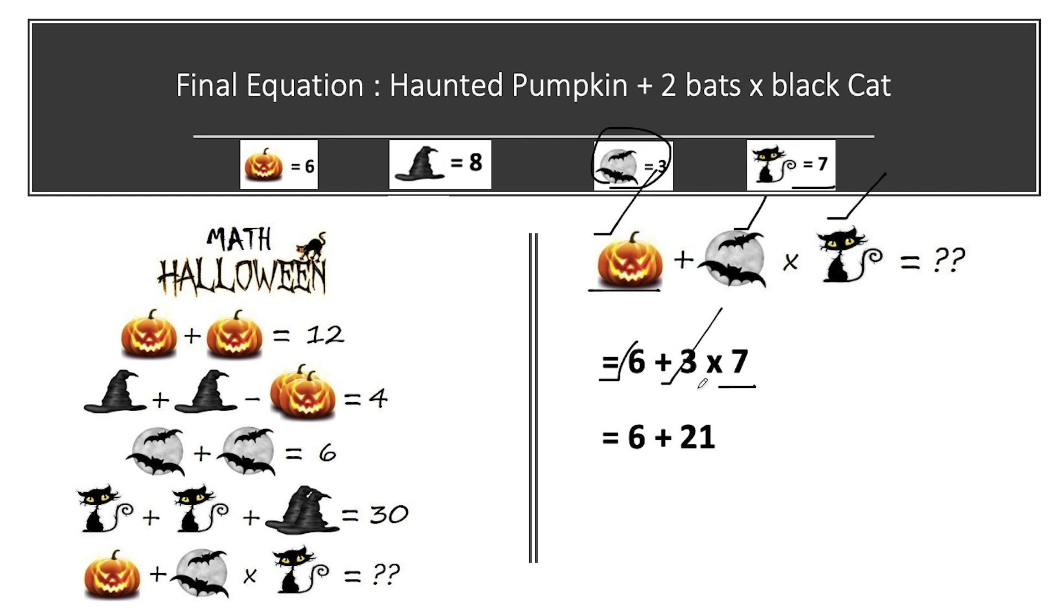So here we have multiplication sign and addition sign. So firstly we will multiply this both. And then the value which will come after multiplication, we will add that with 6. So 7 into 3 comes out to be 21. 21 plus 6 is equal to 27. And we have solved the puzzle.